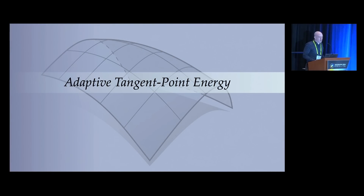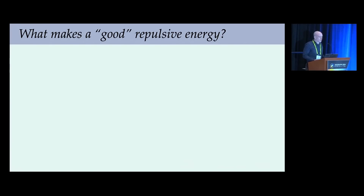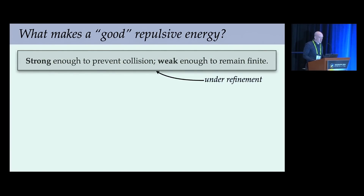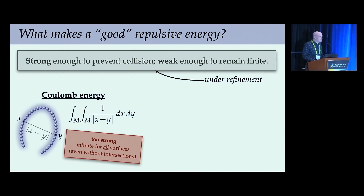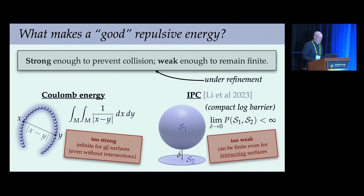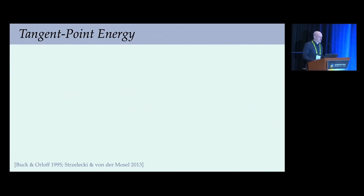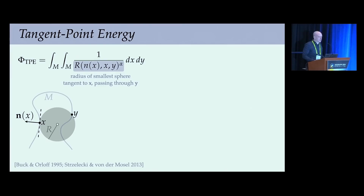An important piece of the story is the choice of repulsive potential itself. Under refinement, it must be strong enough to prevent collision and weak enough to remain finite. A simple Coulomb potential—the integral of inverse distance over all point pairs—is always infinite even for surfaces without self-intersection. The IPC potential, using a logarithmic singularity, turns out to be too weak to be repulsive in the continuous setting; you can construct simple examples where the continuous energy remains finite as you approach self-intersection. So we use the tangent point energy, which penalizes the curvature of the smallest sphere passing through y and tangent at x—infinite for self-intersecting geometry, finite for intersection-free geometry.